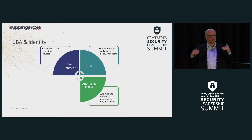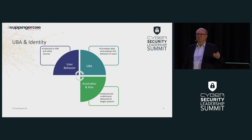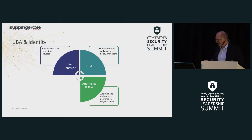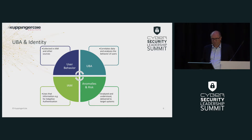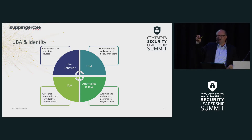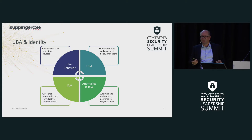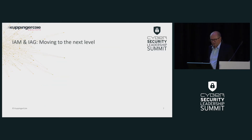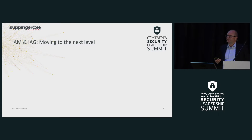For me, that is always a key evaluation criterion when I look at technologies. If a technology doesn't make results actionable, then I have a challenge with it. If I can't fix it easily, we are in trouble. IAM might be one of the systems that uses that information — for instance, for adaptive authentication. So if I have indicators that something is going wrong, I request a stronger level of authentication. That closes the circle and makes the information actionable. And based on that, we can increase our level of security.